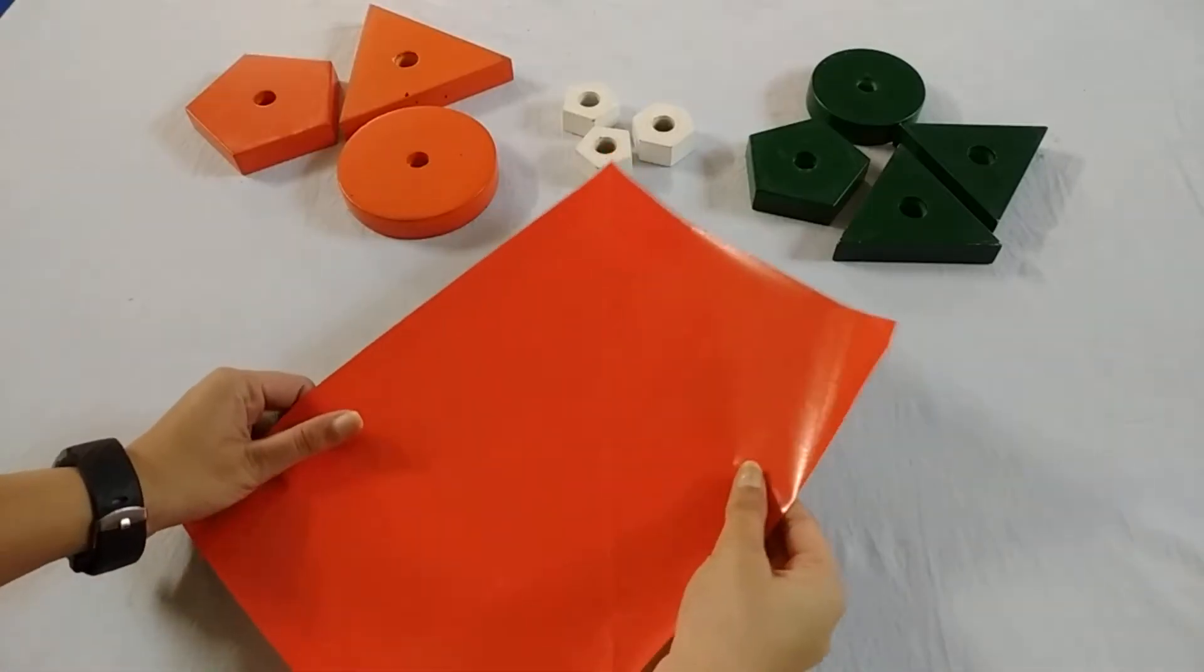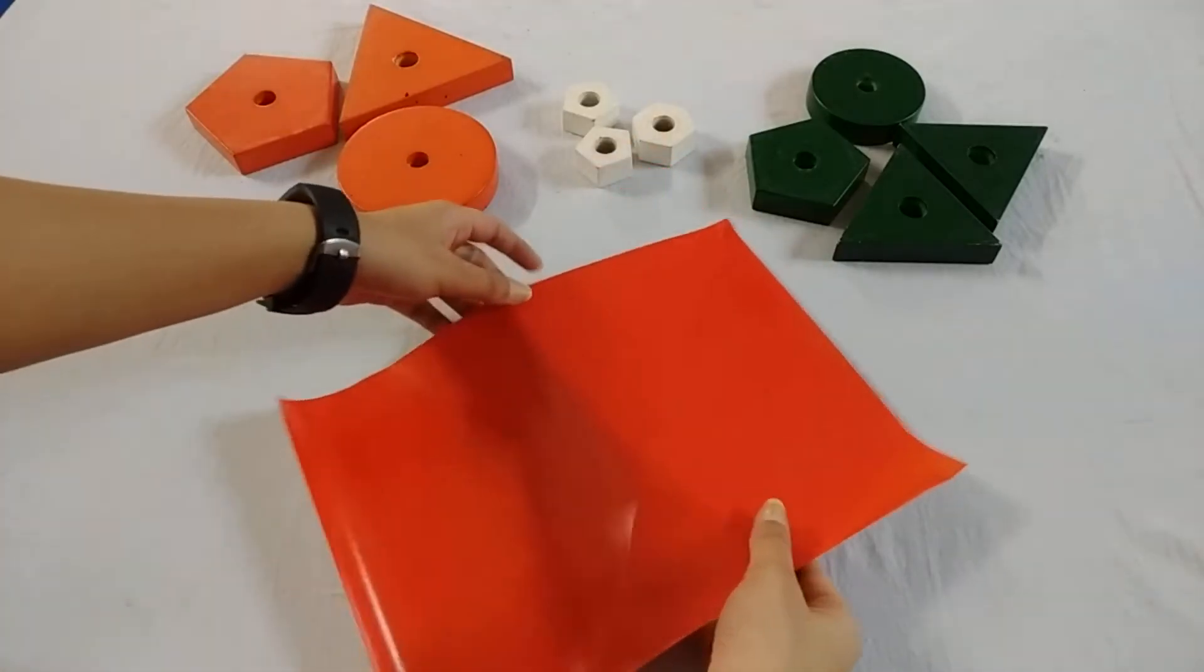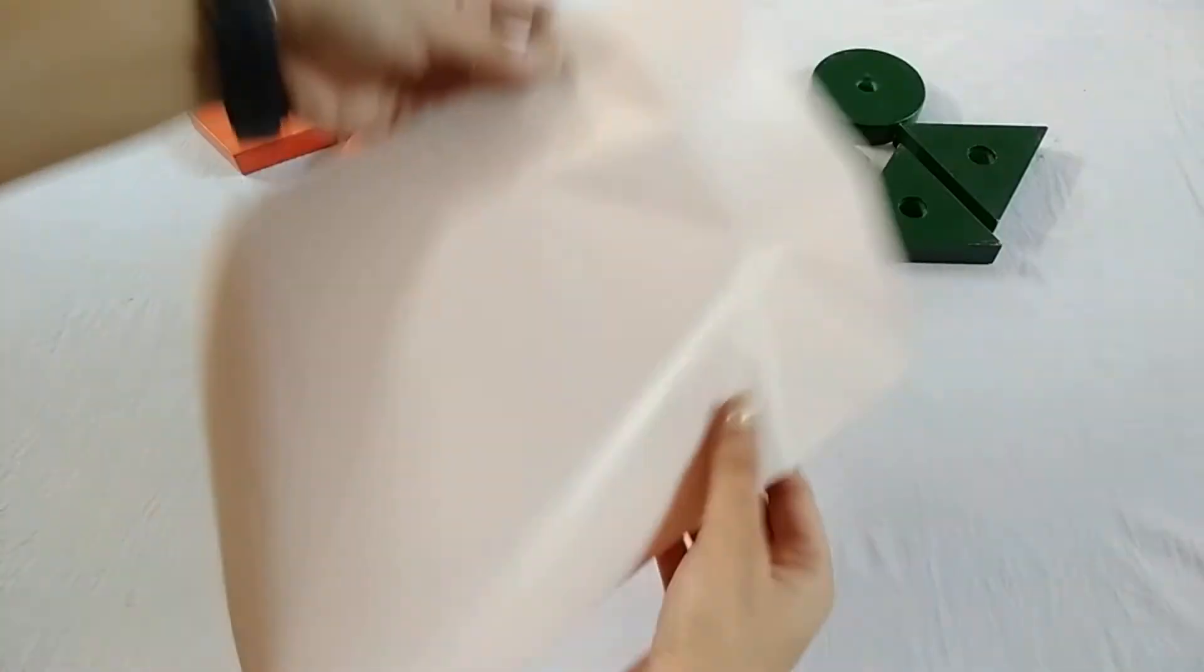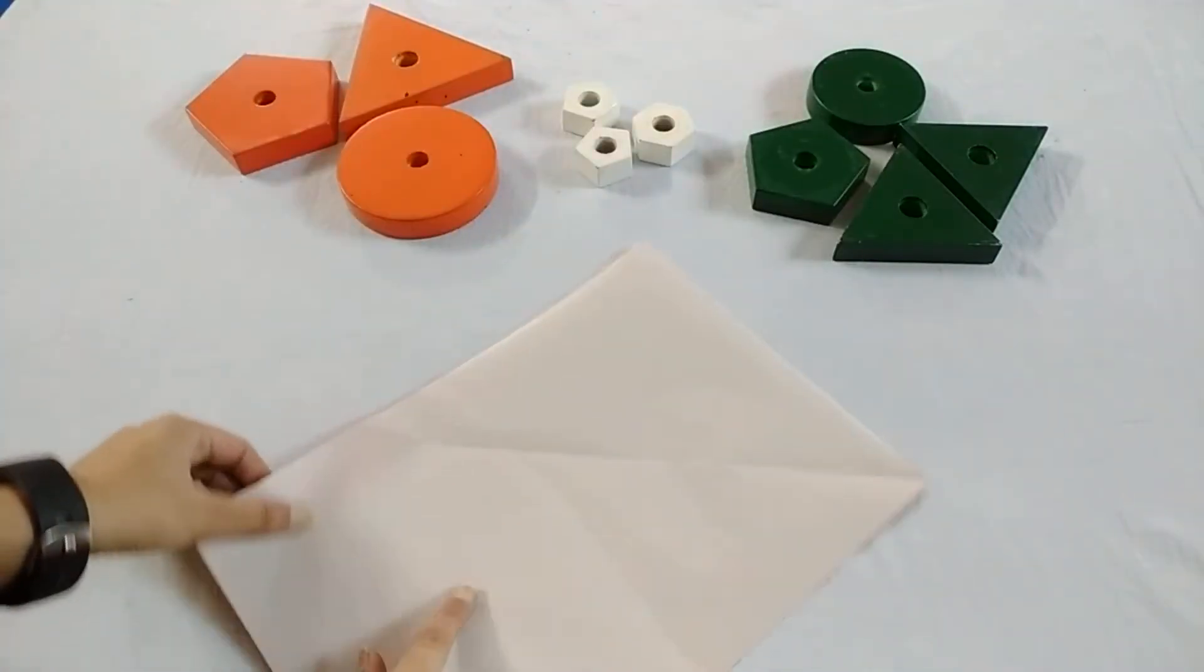First of all kids, take orange sheet and fold it in half from this side.